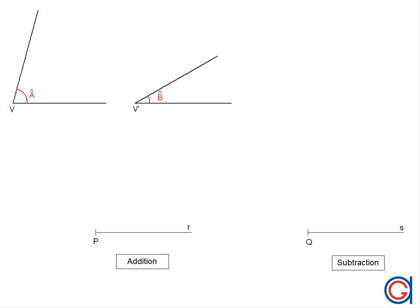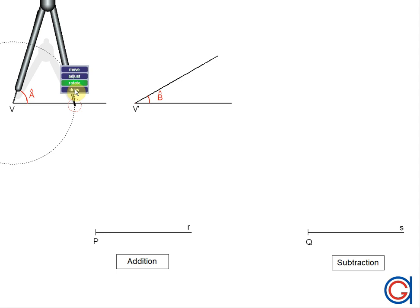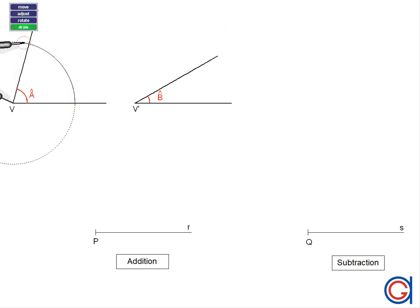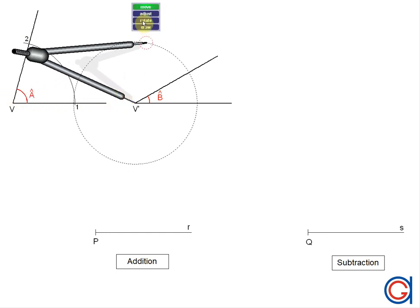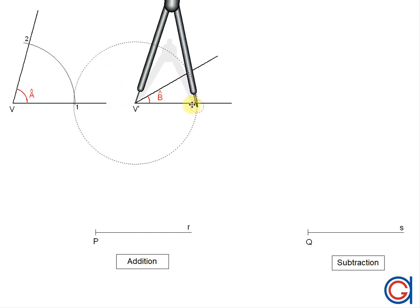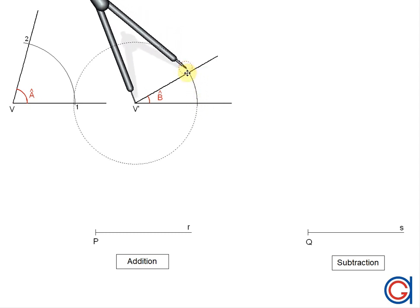The first thing we are going to do is transport angle A onto both rays. To do this, setting our compass to a certain radius, we are going to scribe four arcs. Firstly, setting the compass on vertex V, we scribe an arc until it cuts the adjacent lines at points 1 and 2 as can be seen here. Now with the same radius, centering the compass on angle B, we scribe another arc until it cuts the adjacent lines at points 3 and 4 as can be seen here.